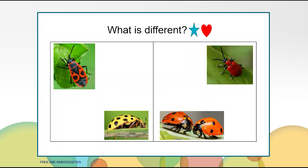What is different in both boxes? It is different because the first box has two bugs and the second box has three bugs. It is different because the first box has bugs with spots and the second box has a bug with no spots. Can you think of anything else that is different?